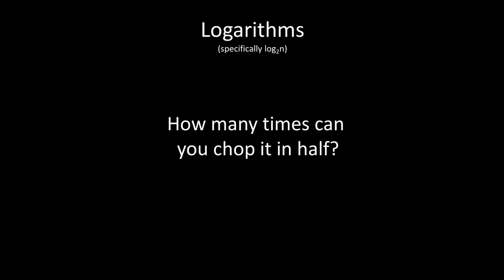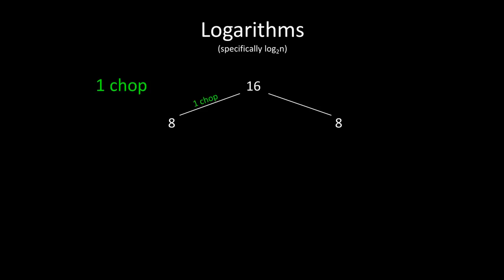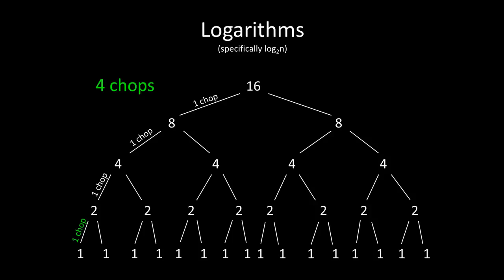So if you're a little bit rusty with logarithms, specifically log base 2 of n, it comes down to how many times you can chop that number in half. So for example, we have the number 16. We can chop it in half once, giving us 2 8s. We can chop those 2 8s in half, giving us 4 4s, so that's 2 chops. We can chop all of those 4s in half, giving us 8 2s, and that's 3 chops. And we can chop all of those 2s in half, giving us 16 1s, and that's 4 chops total. Now interestingly enough, log base 2 of 16 is 4, meaning the number of times that we could chop 16 in half.